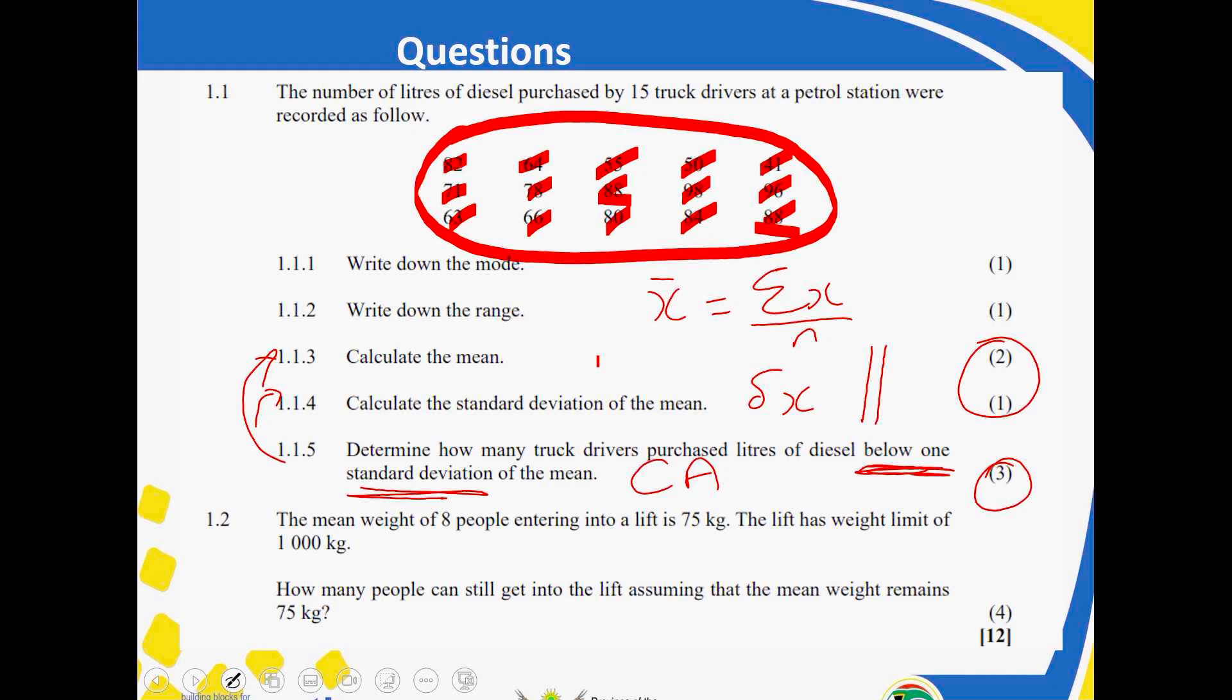Okay. Let's move on to 1.2. The mean weight of eight people entering into a lift is 75 kilograms. The lift has a weight limit of 1,000 kilograms. Now, look, I've got eight people. So, the first thing, each one has got a mean weight of 75. The first thing is to get what is the weight that is already in the lift. So, you will see that eight times 75, you get 600. Then, for us to get to 1,000, it says how many people can still get into the lift assuming that the mean weight remains 75.